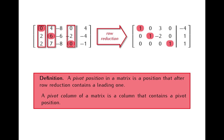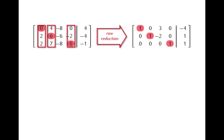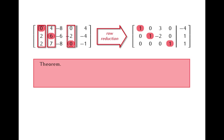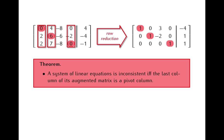Using these notions, we can state properties of systems of linear equations as follows. First, since a system of equations is inconsistent if and only if after a row reduction we have a leading one in the last column, we can now say that a system of equations is inconsistent if and only if the last column of its augmented matrix is a pivot column.